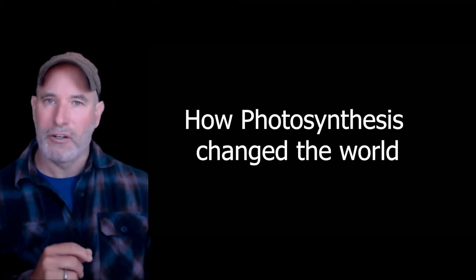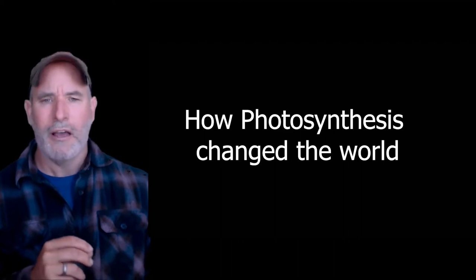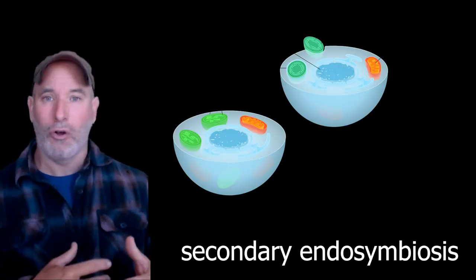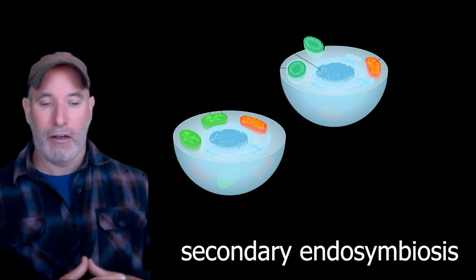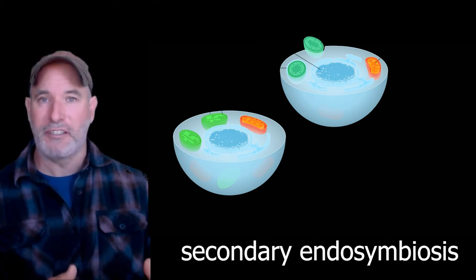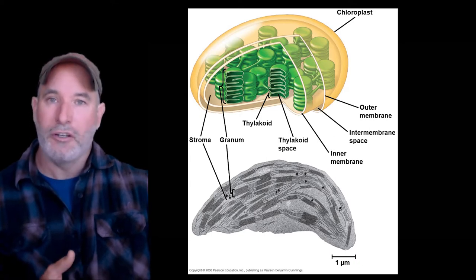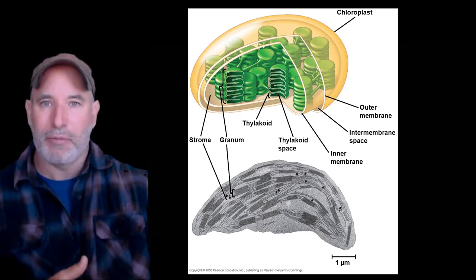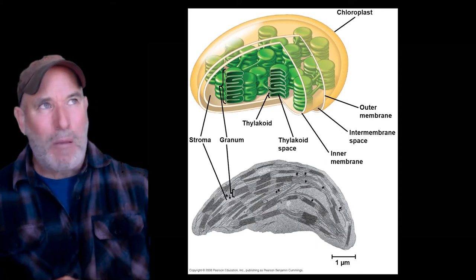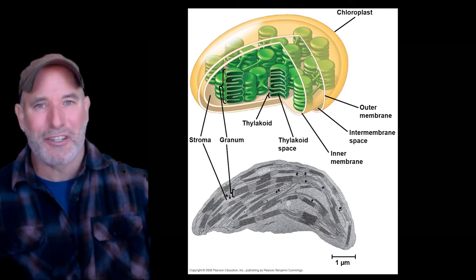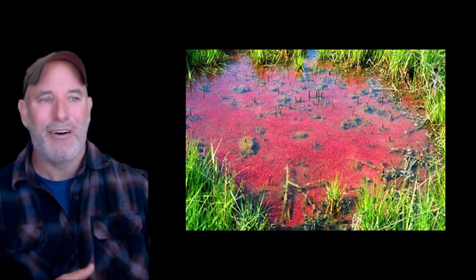What I'm going to talk about is how photosynthesis changed the world — not how the light reaction or the Calvin cycle works — which I think is really amazing. The second thing I'll discuss is the origins of plants and chloroplasts, because much of the photosynthesis today occurs inside chloroplasts. And interestingly, people studying the evolution of photosynthesis study it in bacteria.